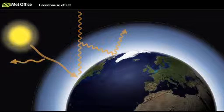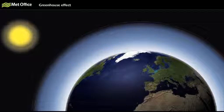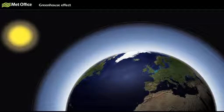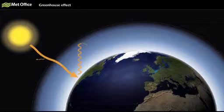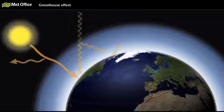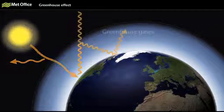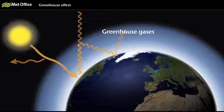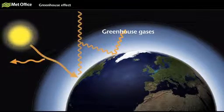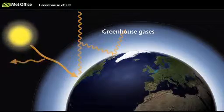Certain gases allow the Sun's energy through but stop it from escaping back into space, acting like a greenhouse. That's why it's called the greenhouse effect. The gases responsible for this effect, such as water vapour, carbon dioxide and methane, are called greenhouse gases.